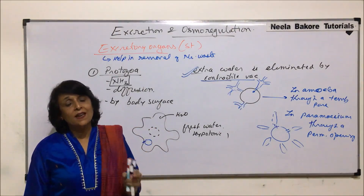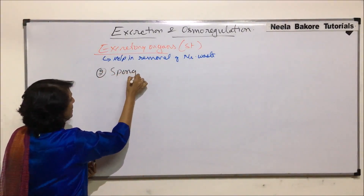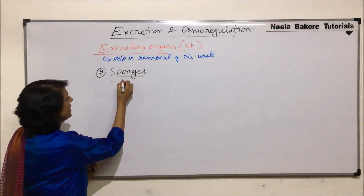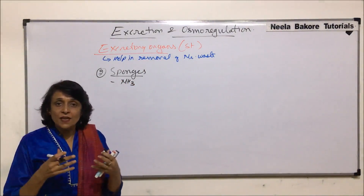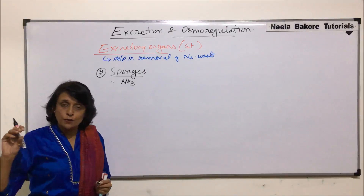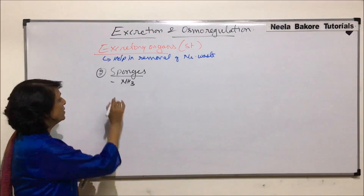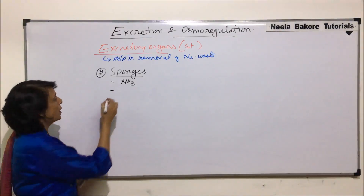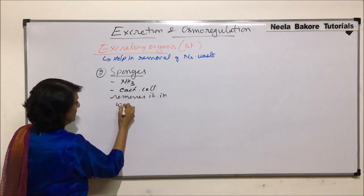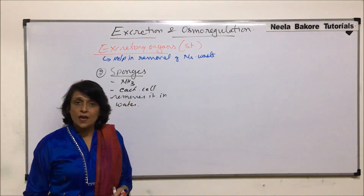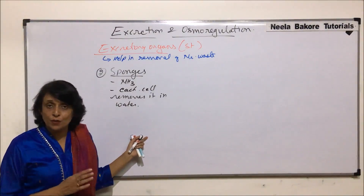The second group is sponges. In sponges, the excretory material is also ammonia. The cells release this toxic waste into the water passing through their incoming canals. When water flows out of the body, it takes the ammonia away. Each cell removes ammonia into the water individually — there is no specialized surface. Most sponges are marine and don't face the hypotonic/hypertonic problem.